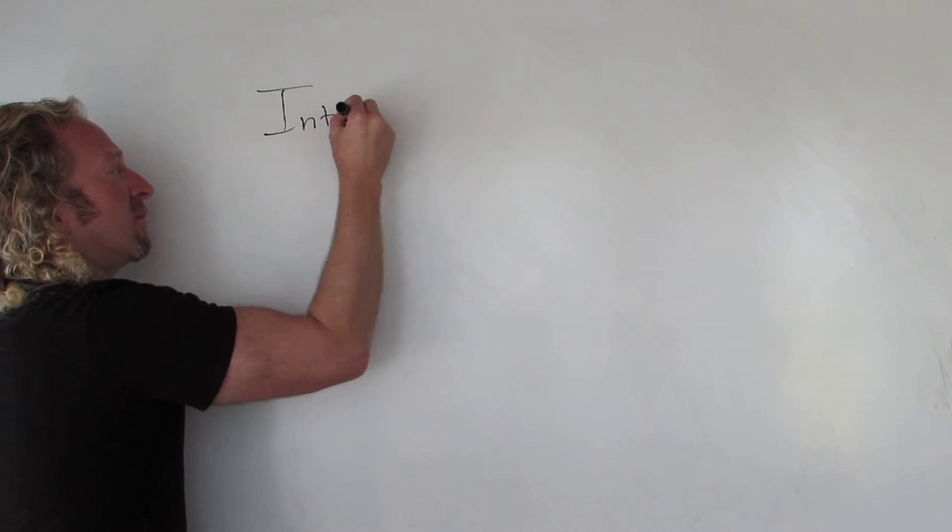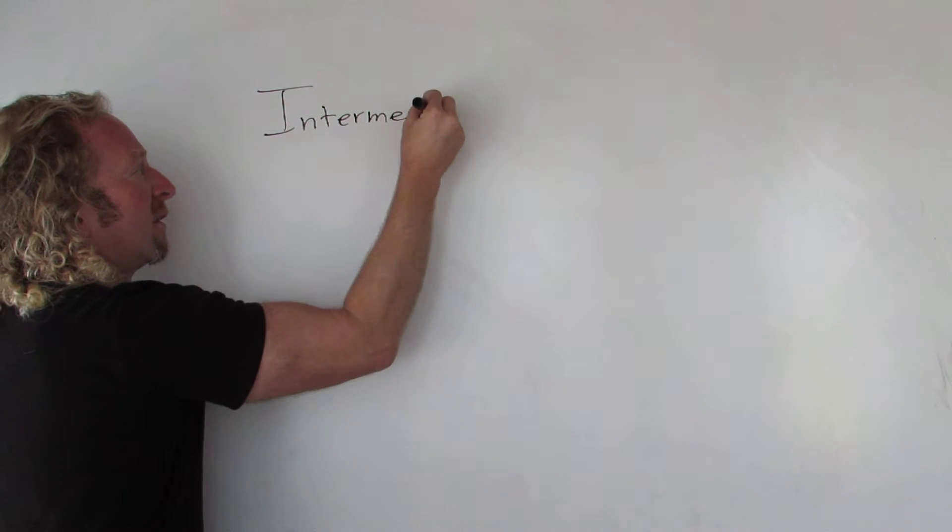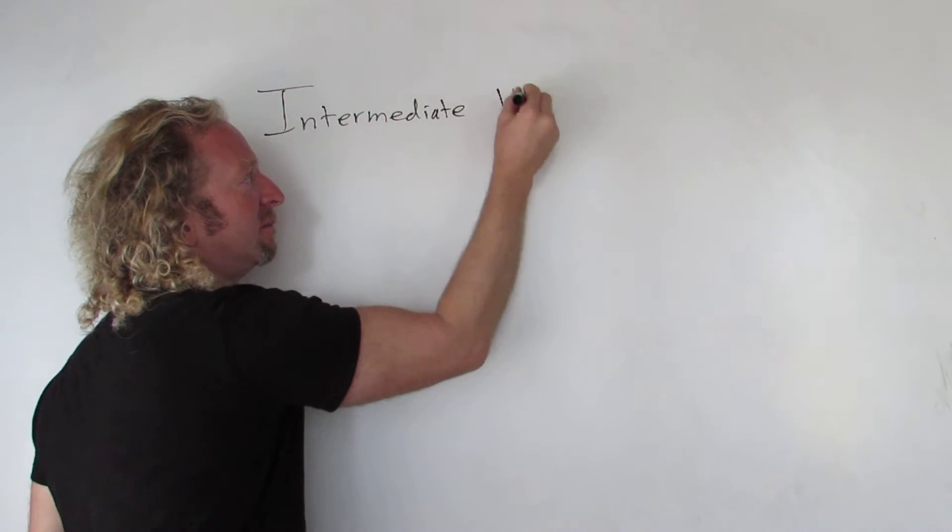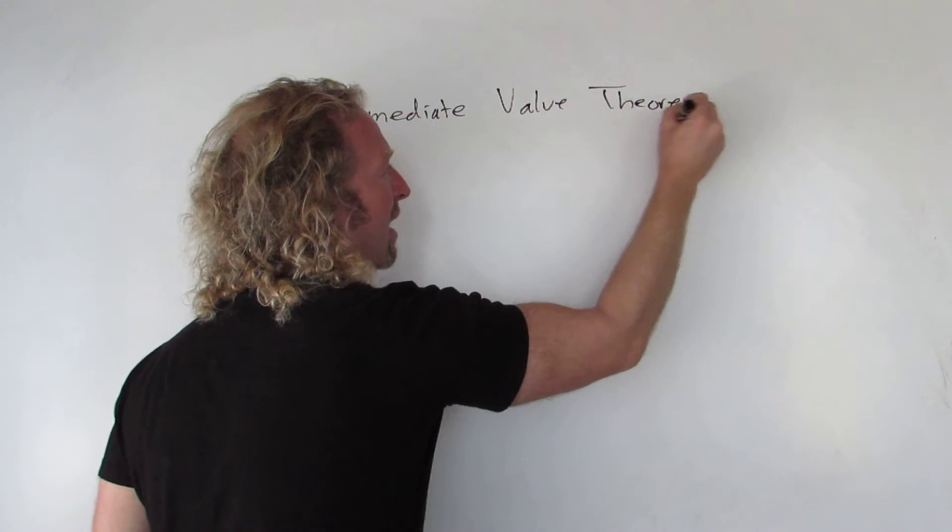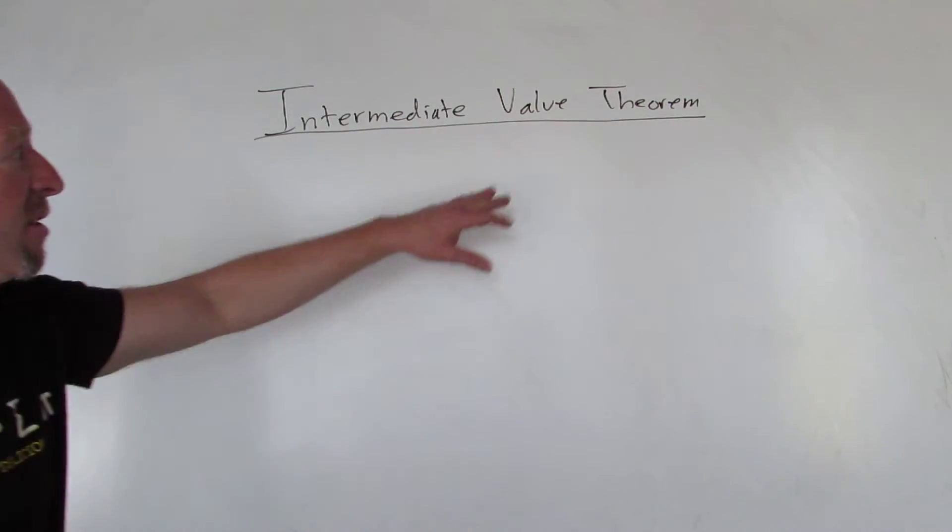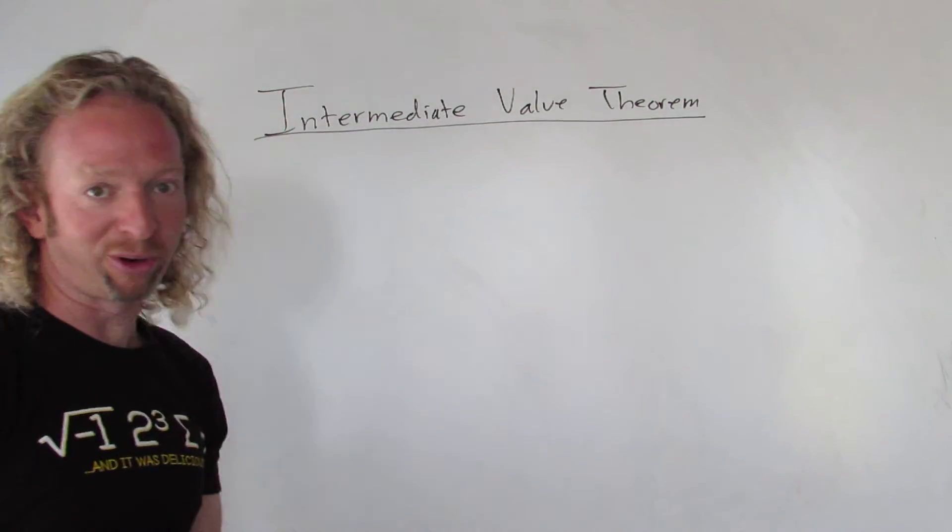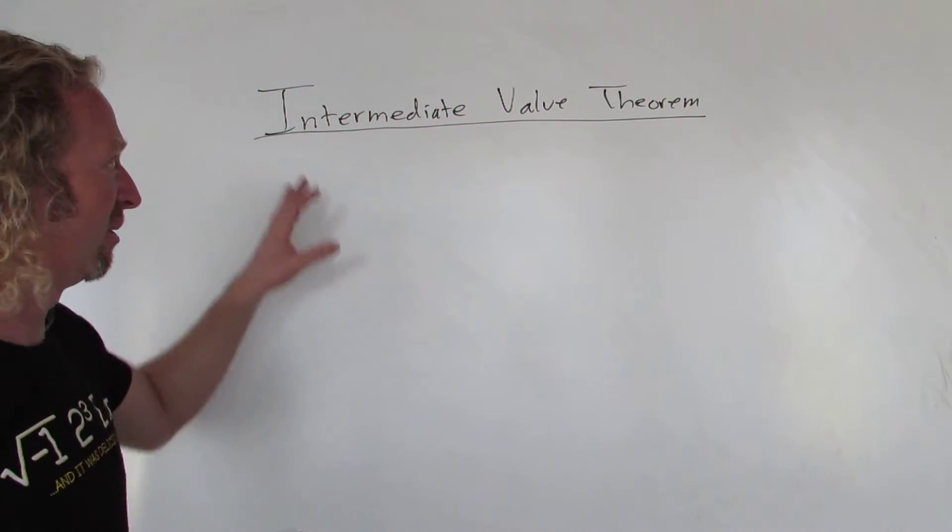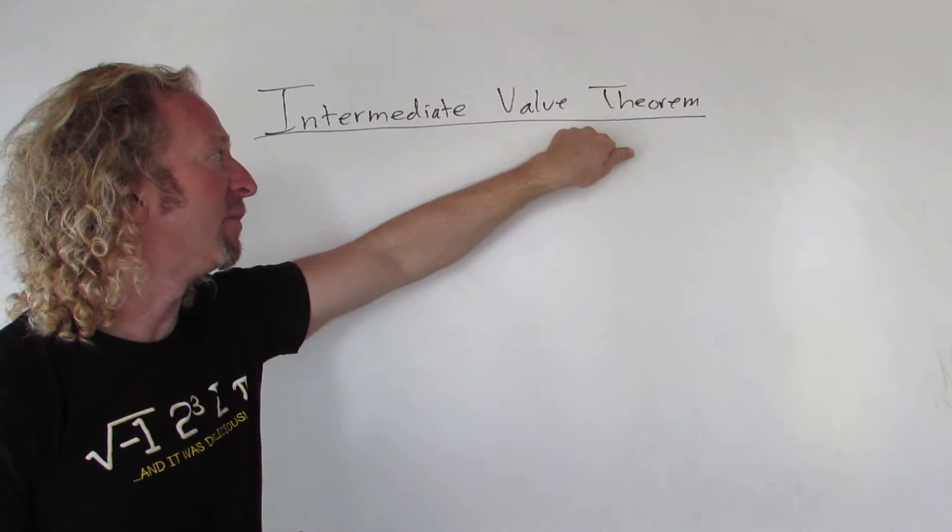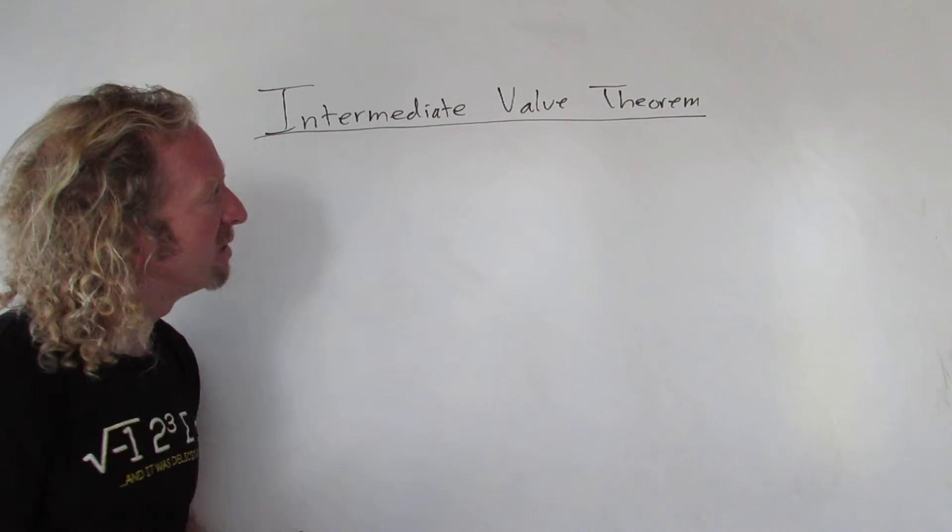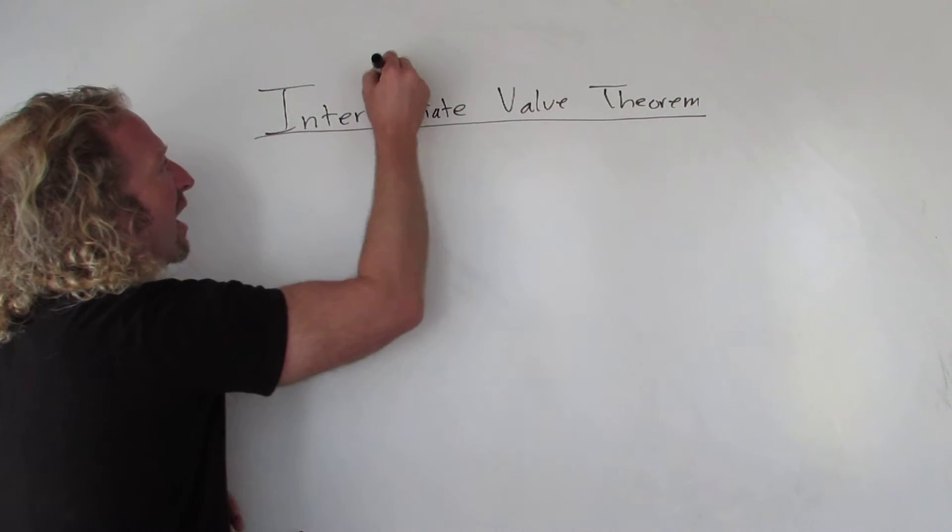So, Intermediate Value Theorem. This is one of the big theorems in mathematics, especially in calculus. A theorem is something that's really important and has been proven. We can abbreviate the Intermediate Value Theorem by using three letters: IVT.